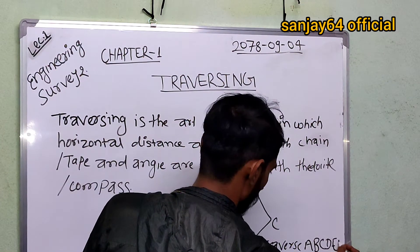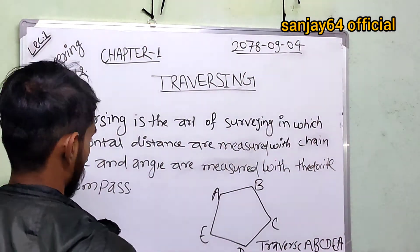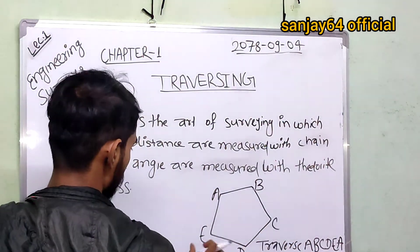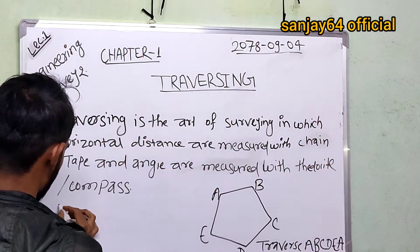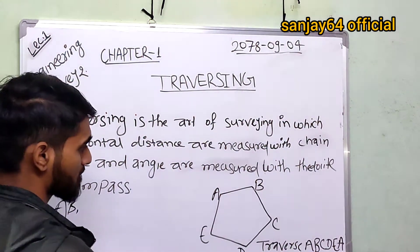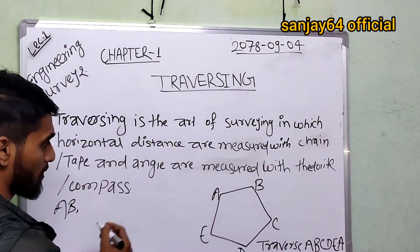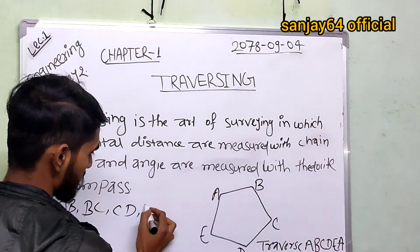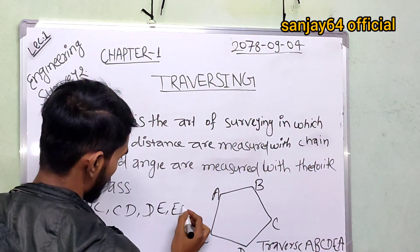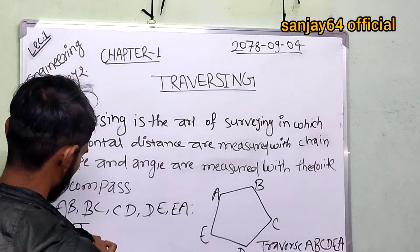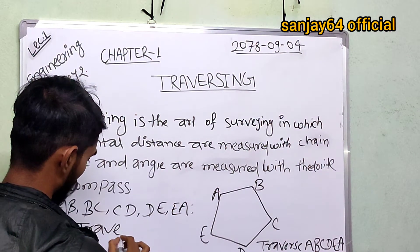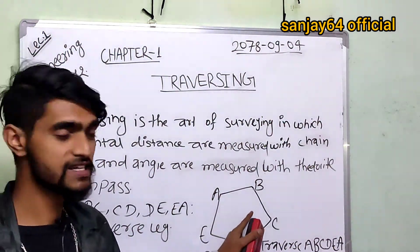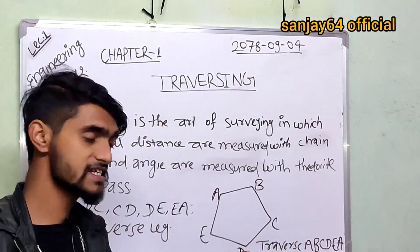The steps of a traverse are: A-B, B-C, C-D, D-E. Now we have the steps A-B, B-C, C-D, and D-E as the legs of the traverse.